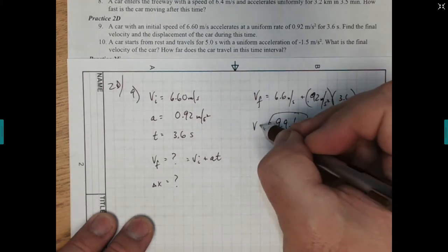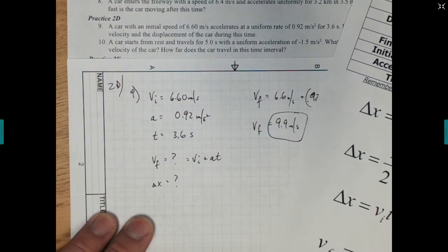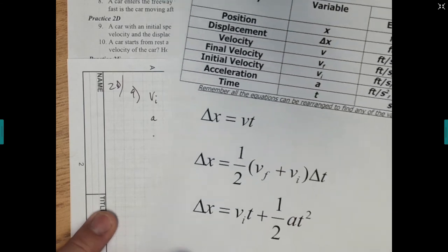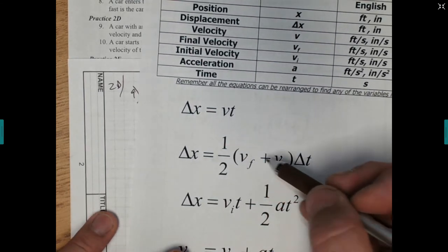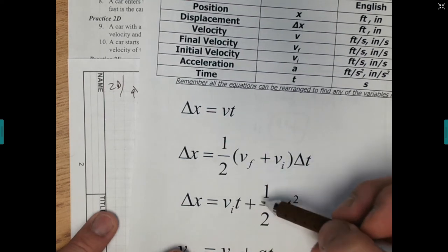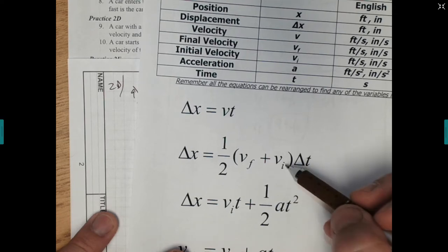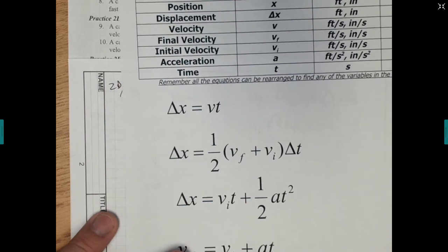And now we're looking for a change in position. Well, now we have final velocity along with these other things. So we could use quite a few different equations. We have a final and initial velocity. We also have an acceleration. So we could really use any of these. I'm going to go ahead and use this. I'm going to do them both, actually, just to show that they both will work.